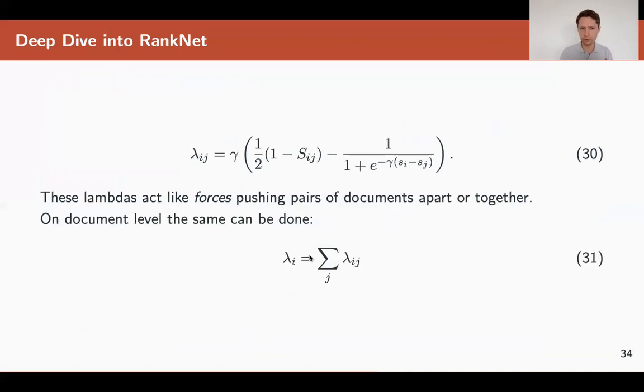We can then combine multiple forces together. For every pair of documents ij, we have these numbers. For every document i, we can take all other documents j and sum up these numbers. This will be the total force applied to document i, pushing it either up or down. These are faster to calculate this way. We can work directly with lambdas, which push different documents up and down, and this way we learn a model and create a ranking.